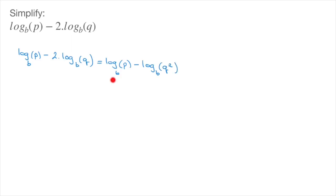We now have two logarithms, and they are both written in the same base, b. Furthermore, the second logarithm is being subtracted from the first, so we can use the subtraction rule for logarithms to state that this equals log base b of p over q to the power of 2. And that's the final answer — we've simplified this logarithmic expression.